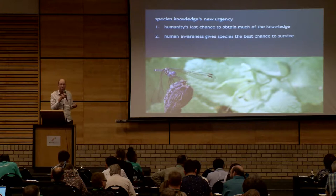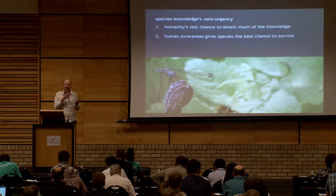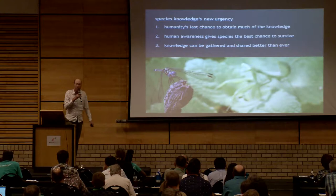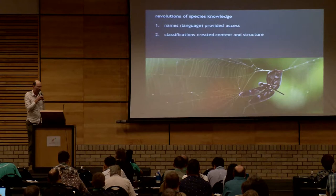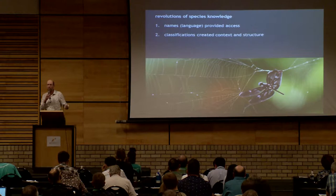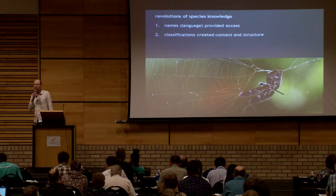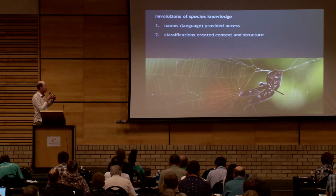There's a new urgency to collecting and sharing that kind of basic knowledge, and we've heard a lot about it this week. In many cases this is our last chance to obtain a lot of information, and every bit we can add to human awareness of biodiversity is again a gain for conservation. But the really exciting aspect is that it was actually never easier to obtain and share that knowledge. We've seen several revolutions in this process — it all started with hunter-gatherers observing and naming things, and then Linnaeus came along and put those names into a classification system.